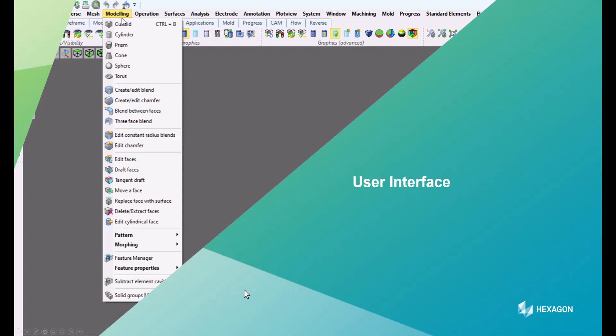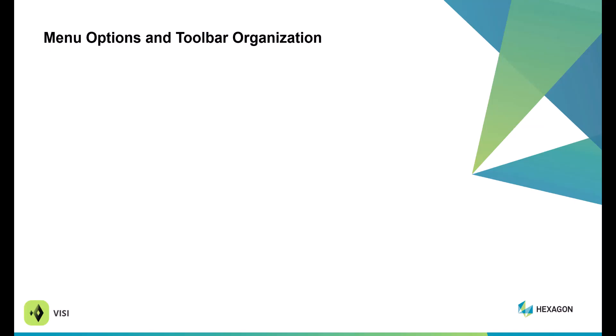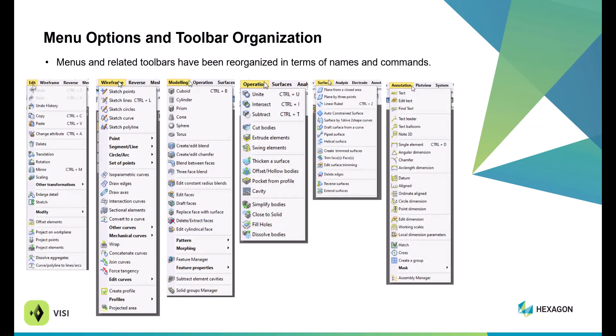Now we're going to go into some of the new user interface updates. The menu options have changed a little bit in 2023.1. The main changes I've noticed are that operation blends have now been moved to modeling blends, and cut bodies have been moved to operations. There's been some cleanup work with the command drop-downs. A lot of the icons have been fully updated in this version as well.